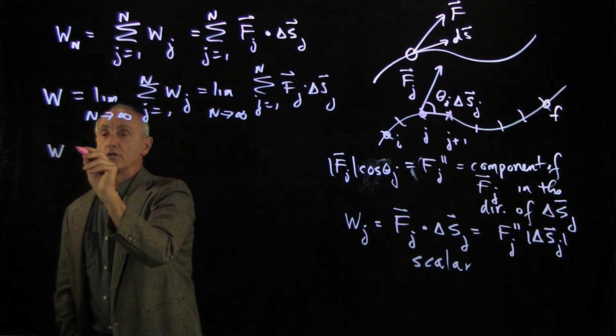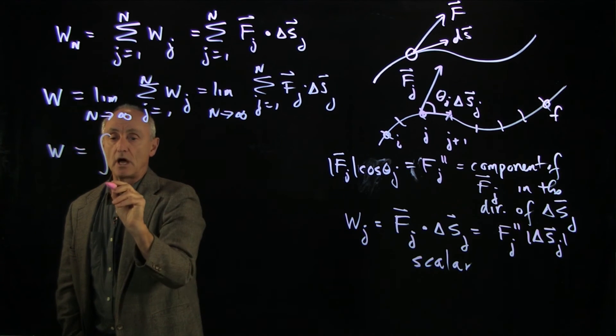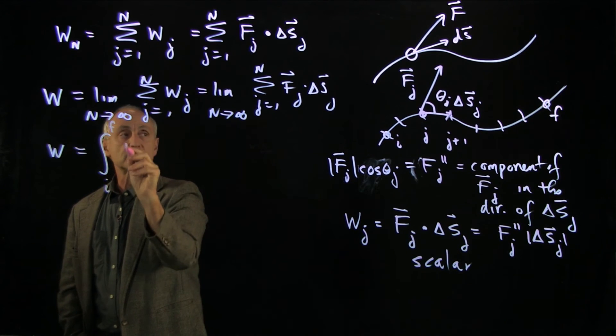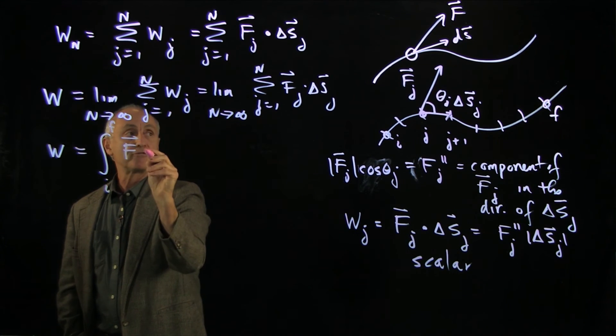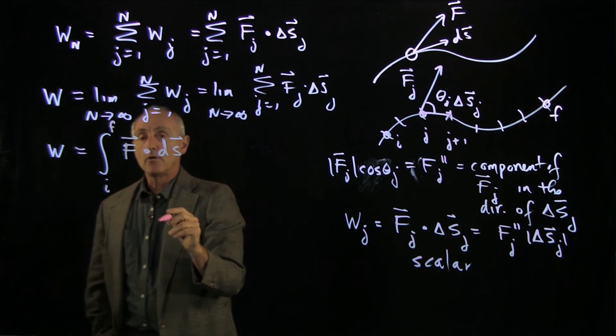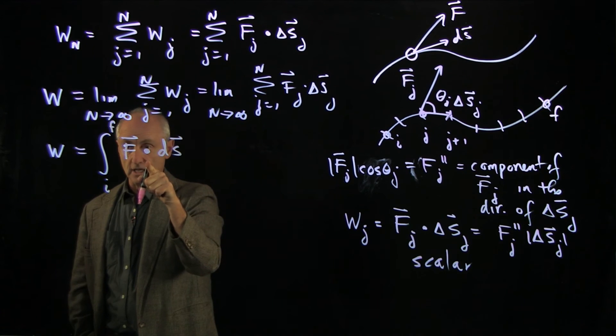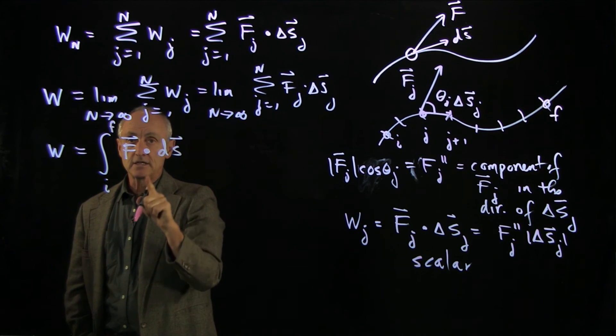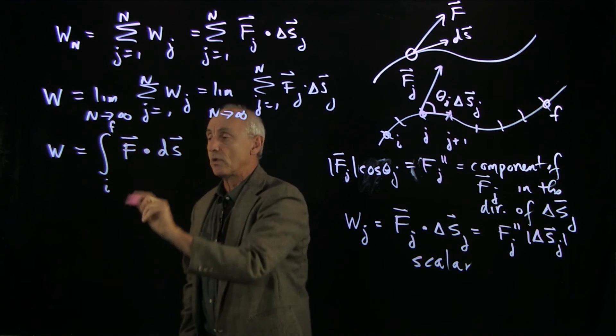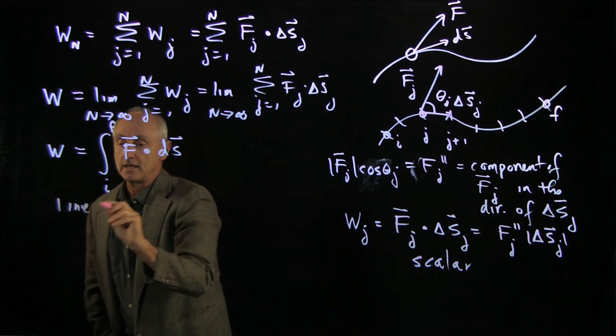And we denote that with a new notation. We'll denote a line from our initial to final. And it's a dot product of the force dotted into the small displacement. Now, whenever we see the dot product in an integral, that distinguishes it from a normal integral, and this is what we call a line integral.